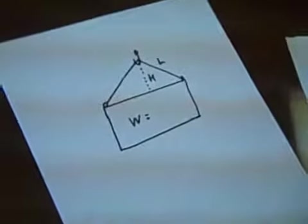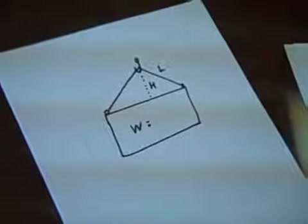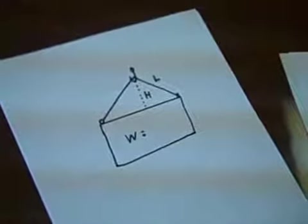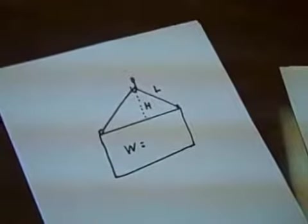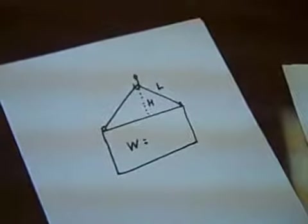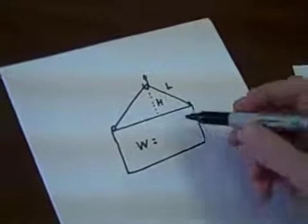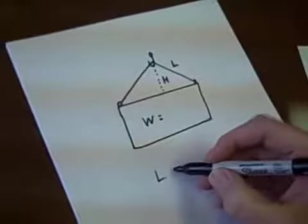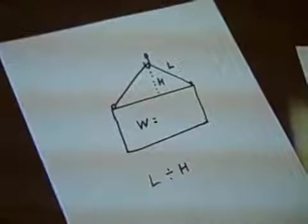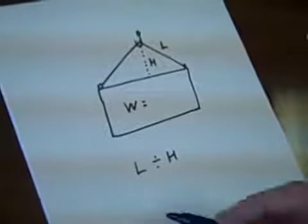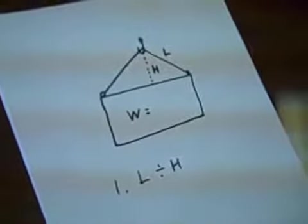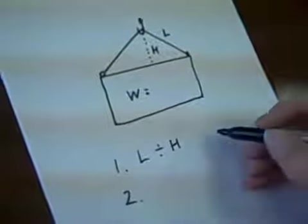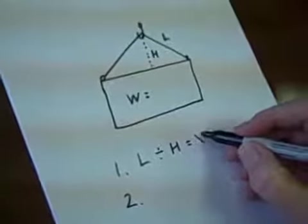So here's how we go about calculating the force on each sling. Divide the leg length by the vertical height that the hook is above the load. So we're going to take L divided by H. That's the first step.